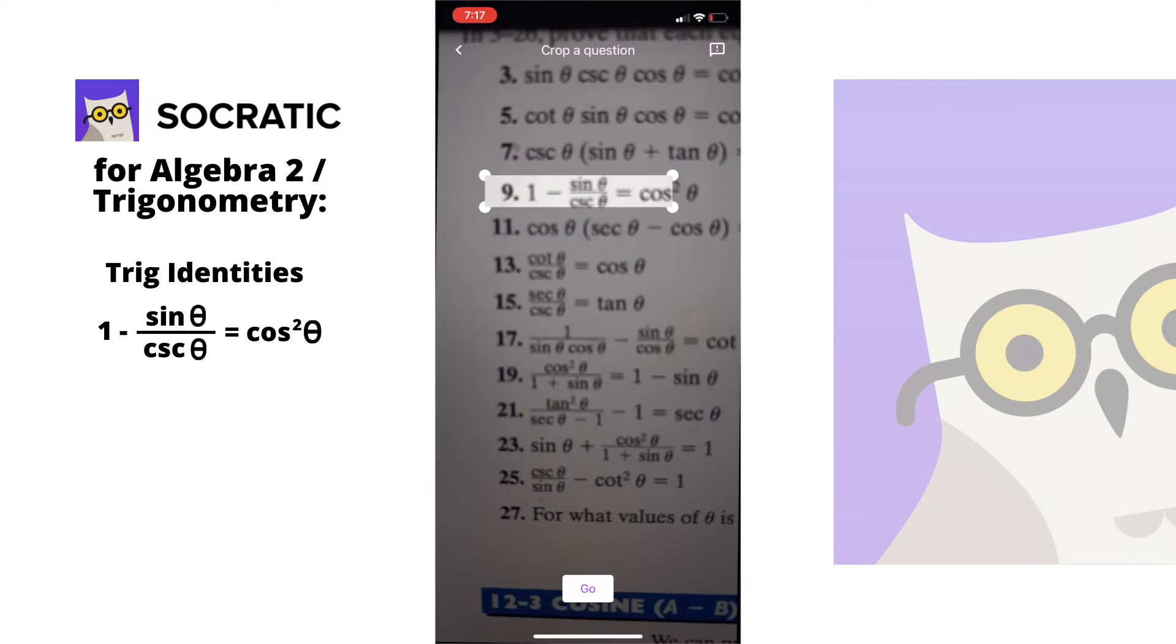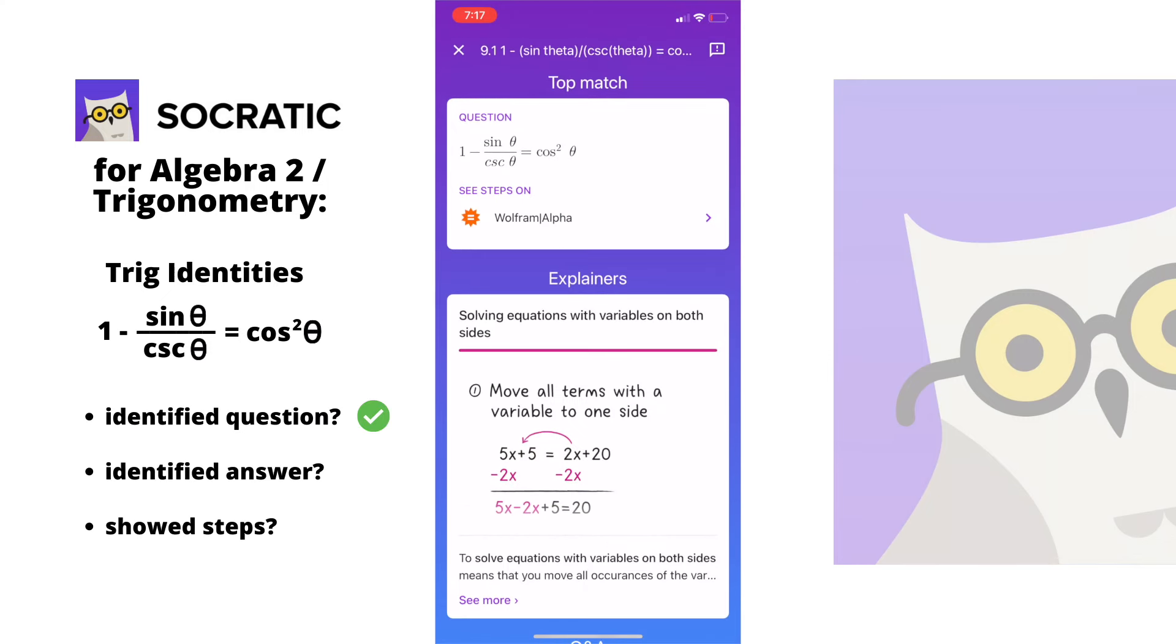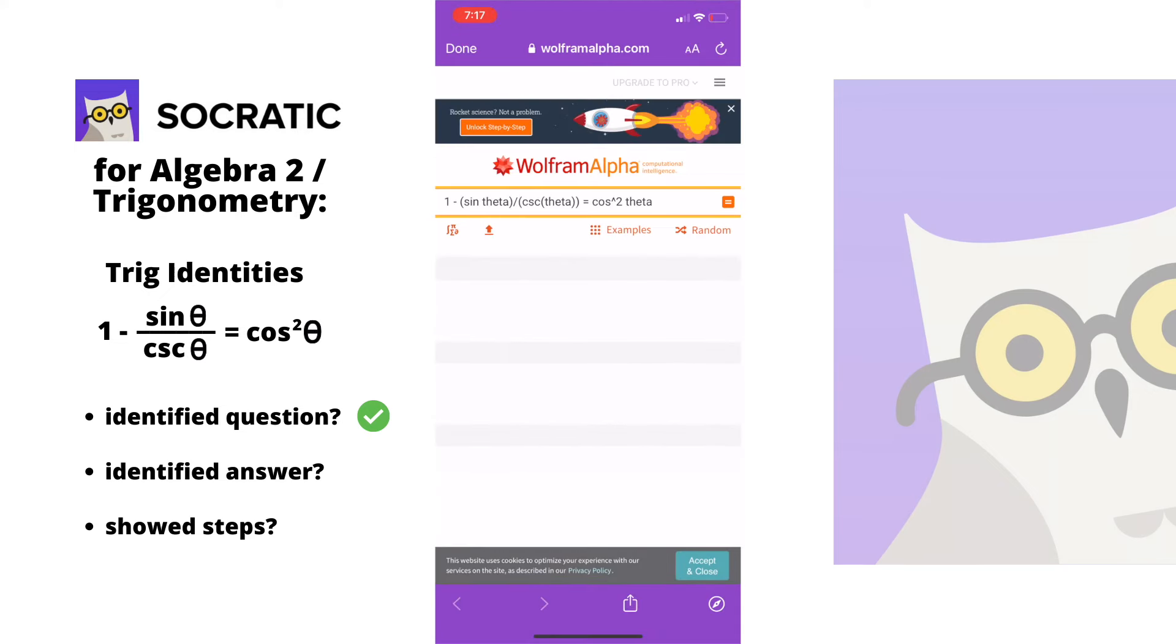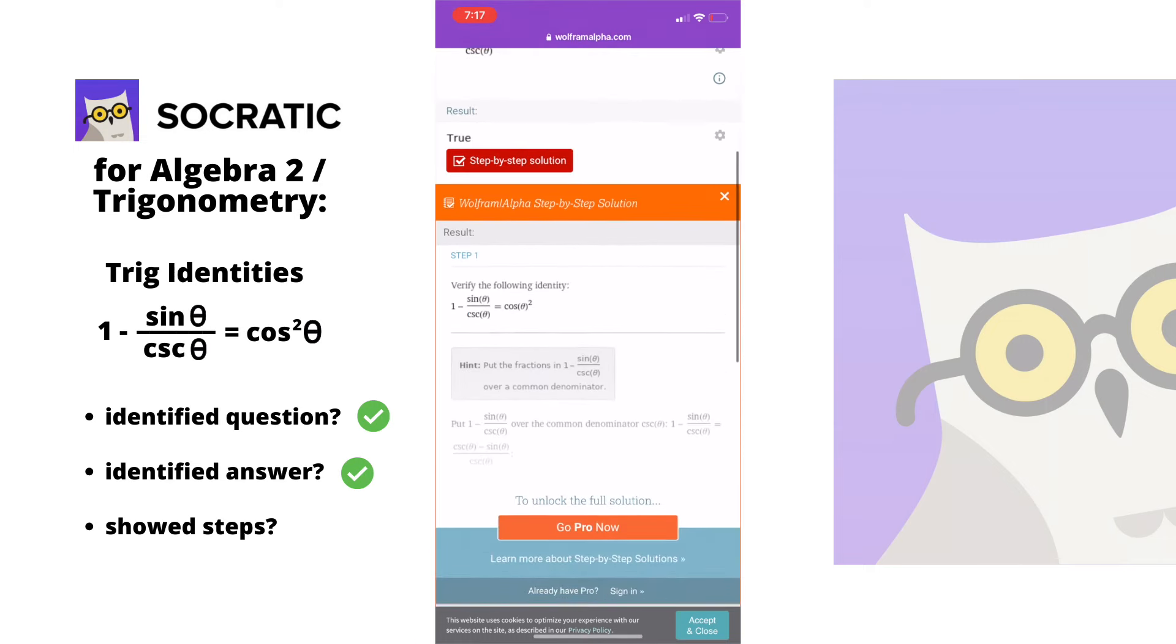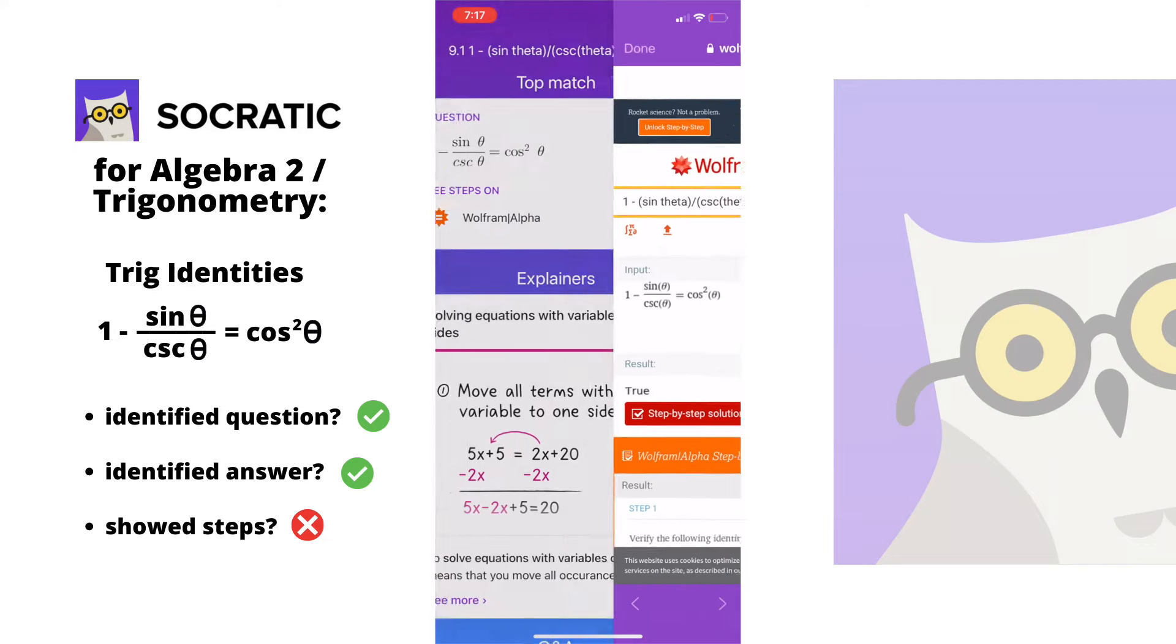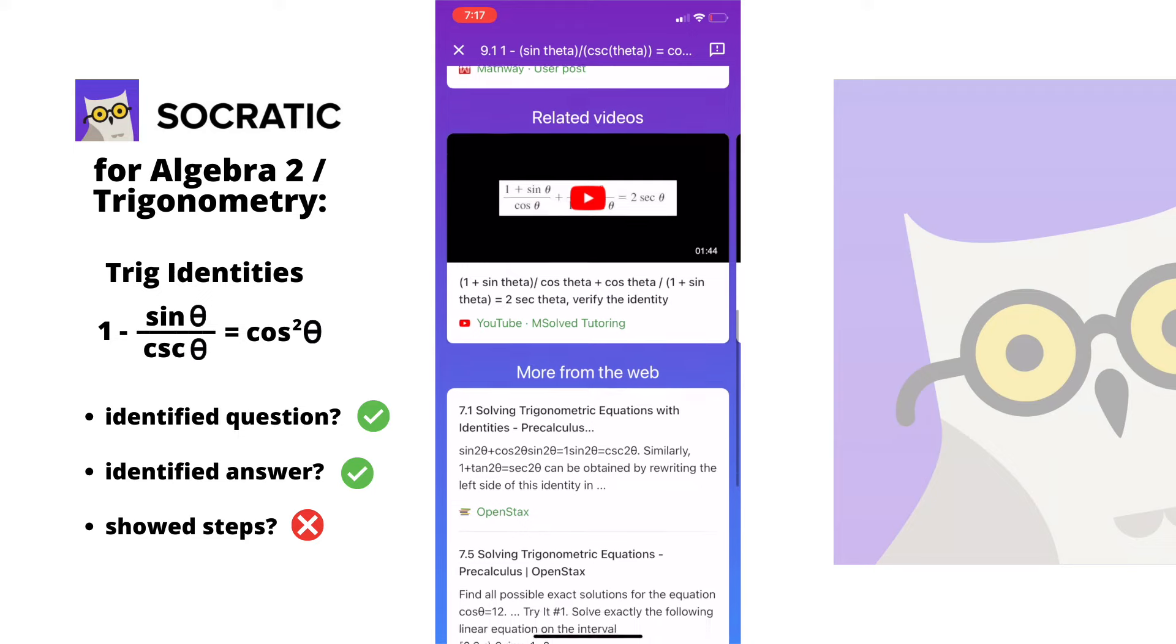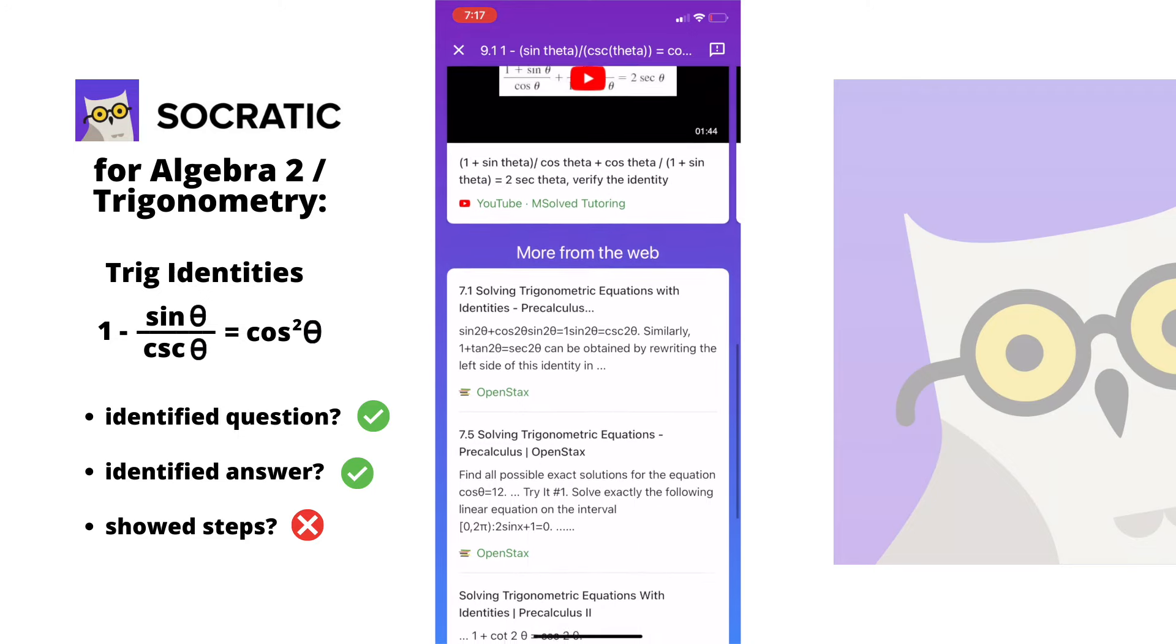For trig, it did not quite work for the trig identity. I think if the same exact question is not on Google, then it's hard for Socratic to give you the actual answers. It first led me to Wolfram Alpha, which is like an online calculator, but like Mathway, you need to pay to show the steps. And then there are a lot of other trig identity examples, but not the exact one I'm looking for. Not great, but I still think it's better than Mathway.